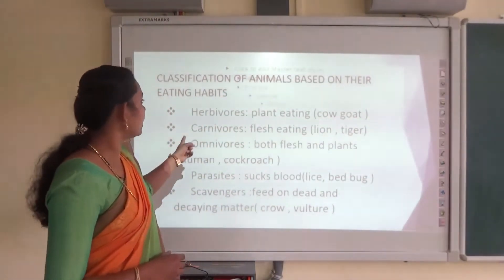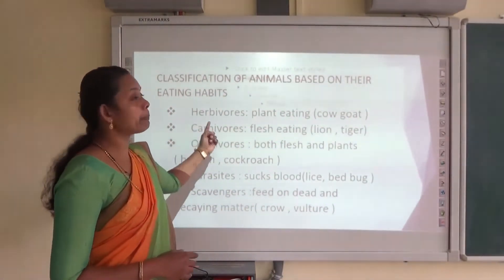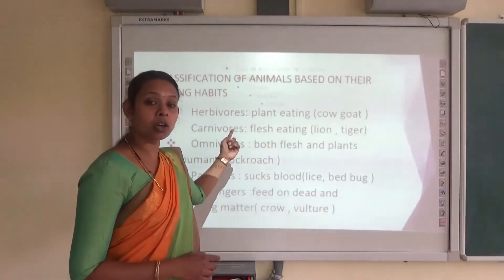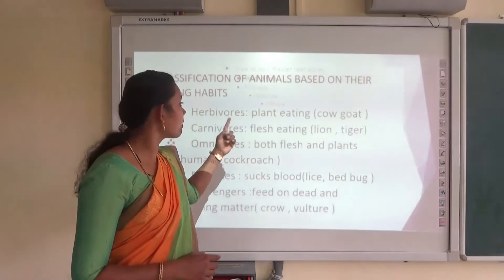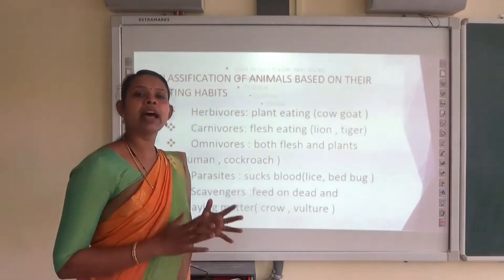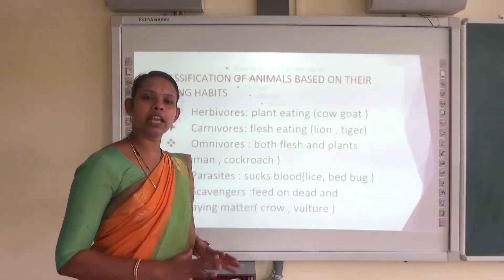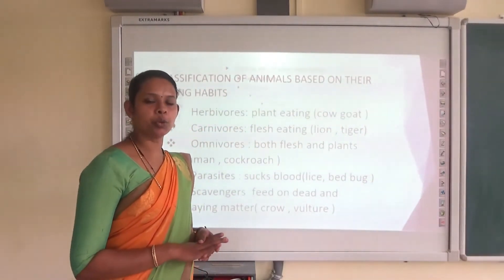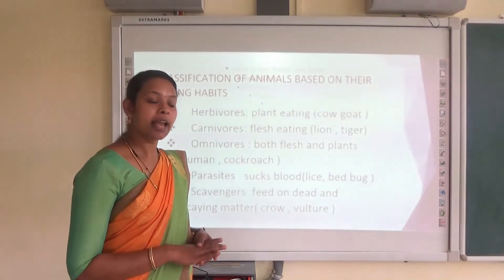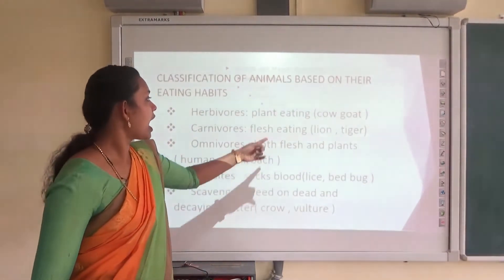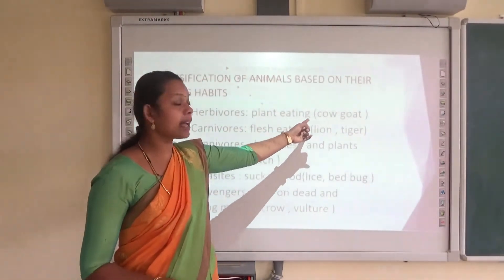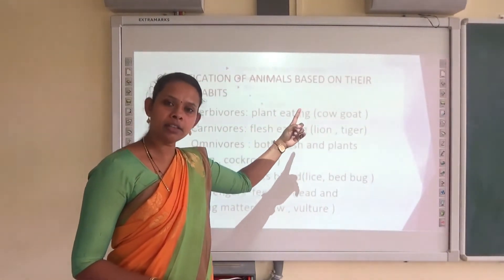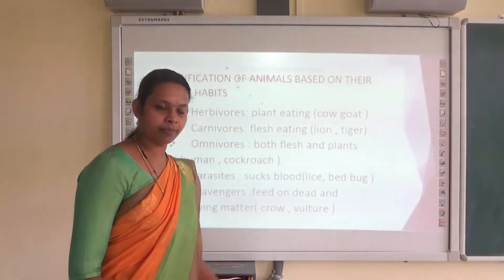The first one: herbivores. Herbivores means the animals that eat only plants. They are known as herbivores. And examples are cow and goat.